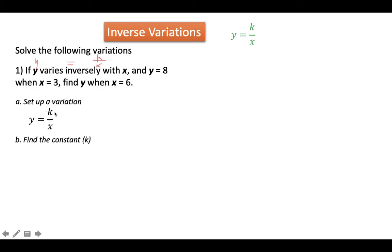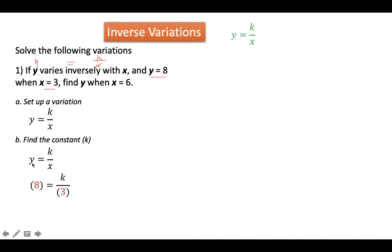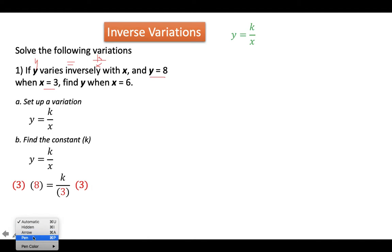Step 2: we find k, the constant. We replace x and y using the given values. Since x is equal to 3 and y is equal to 8, we substitute into the variation: 8 is equal to k over 3. To isolate k, we multiply both sides by 3 so that the 3 cancels, and 8 times 3 is 24. So our k is 24.